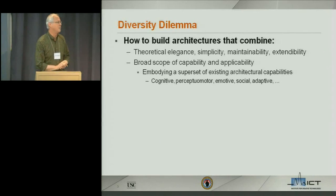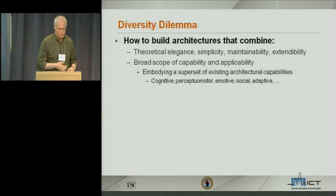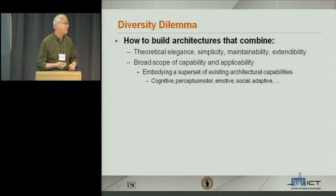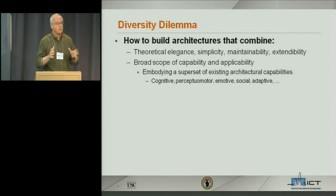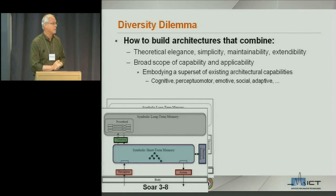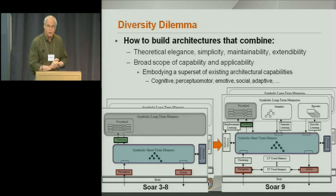The issue I've been working on is something called a diversity dilemma: how to build architectures that combine theoretical elegance and simplicity with broad functional capability, including cognitive, perceptual motor, motive, social, and adaptive capabilities. The problem is architectures often start out simple, but as they live over time there's a push for more functionality, they get more complex, and you lose the benefits of theoretical elegance. Looking at SOAR, up to version 8 it was fairly simple, but SOAR 9 added three additional long-term memories, additional working memory, and three new learning mechanisms.